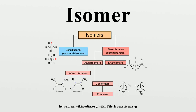In stereoisomers, the bond structure is the same, but the geometrical positioning of atoms and functional groups in space differs. This class includes enantiomers, which are non-superimposable mirror images of each other, and diastereomers, which are not. Enantiomers always contain chiral centers and diastereomers often do, but there are some diastereomers that are neither chiral nor contain chiral centers.